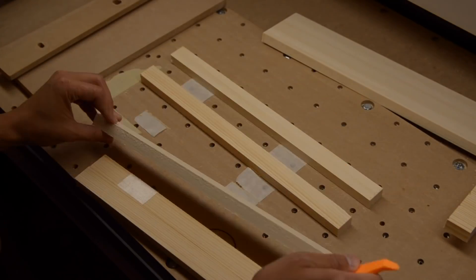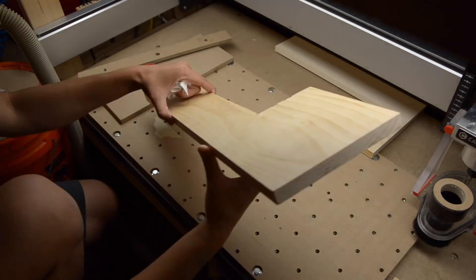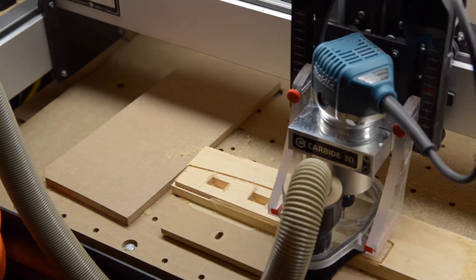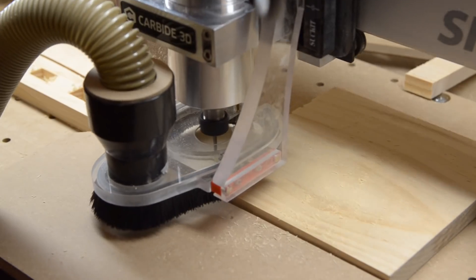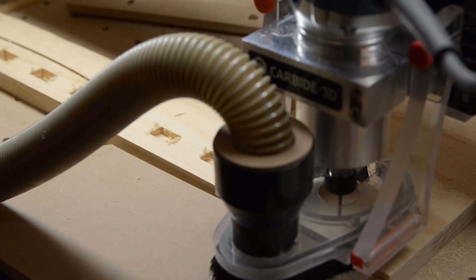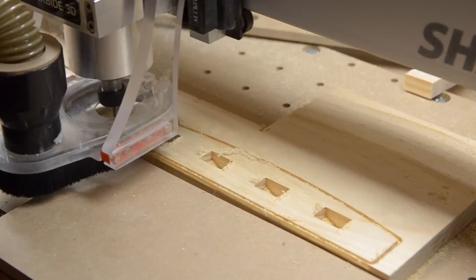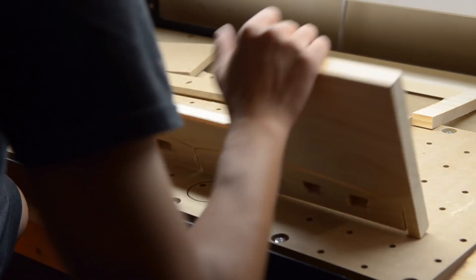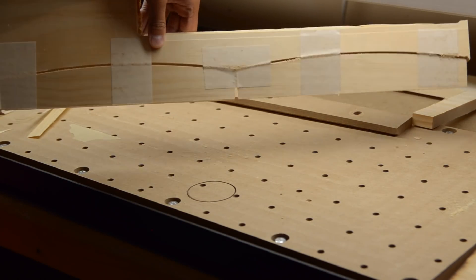After they were done being cut out, I slapped on a scrap piece of pine that was three quarters of an inch thick from a different project to cut out my end caps. Since I'm referencing off the wasteboard for all of these operations, I don't need to re-zero my z-axis, which is really convenient. When these were done, I pulled them off the wasteboard and can I just point out how perfectly I nailed my depth of cut?